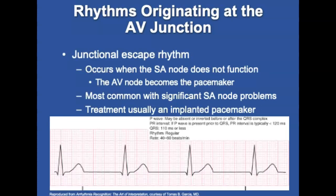Junctional escape rhythm occurs when the SA node does not function and the AV node takes over as the pacemaker. The rate is 40 to 60 beats, usually regular with little variation between R-on-R intervals. The P wave is inverted and present before the QRS. Junctional rhythm often accompanies SA node disease, increased vagal tone, inferior wall MI, or other conditions, and can occur after resuscitation from cardiac arrest. Treatment depends on the underlying cause but may require a surgically implanted pacemaker; in the field, atropine should be considered and TCP may be necessary if the patient's condition is severely compromised.